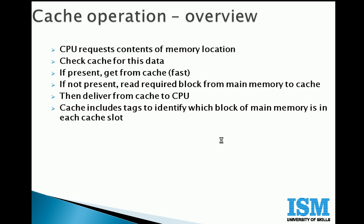Coming to cache operation — a simple overview of how the cache operates. Let's say a CPU requests the content of a main memory location. The CPU checks the data from the cache: is the data I'm looking for present in cache? If it is present, it gets the data from cache, and the operation is completed quite fast.